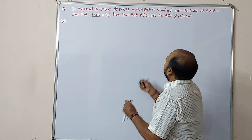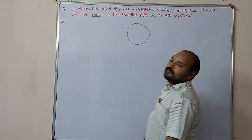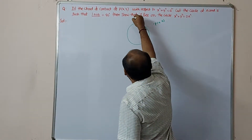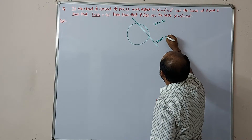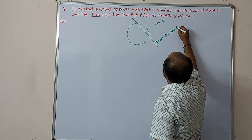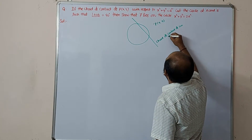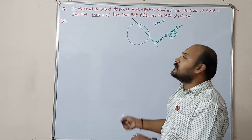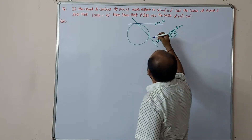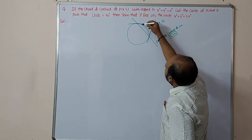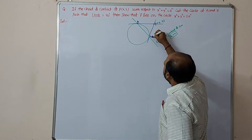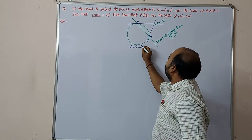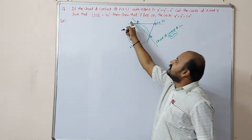The circle equation is given, and the point is P(x₁, y₁). The chord of contact is S₁ = 0. The definition of chord of contact is the line joining the points of contact of tangents drawn from point P. This is one tangent from point P, and this is another tangent — the chord of contact cuts the circle in two different points A and B.